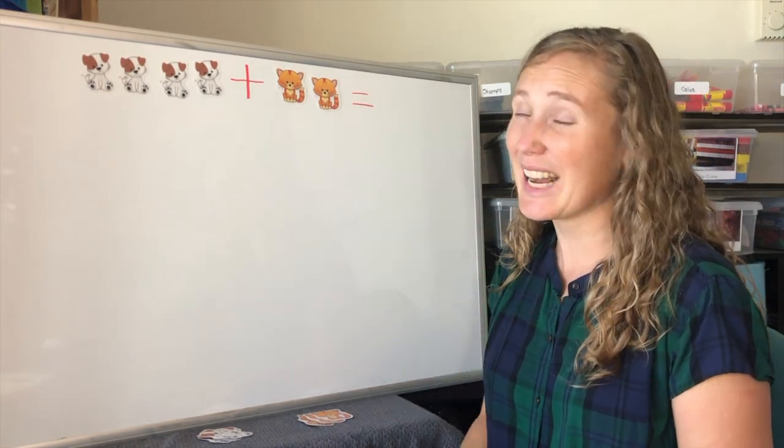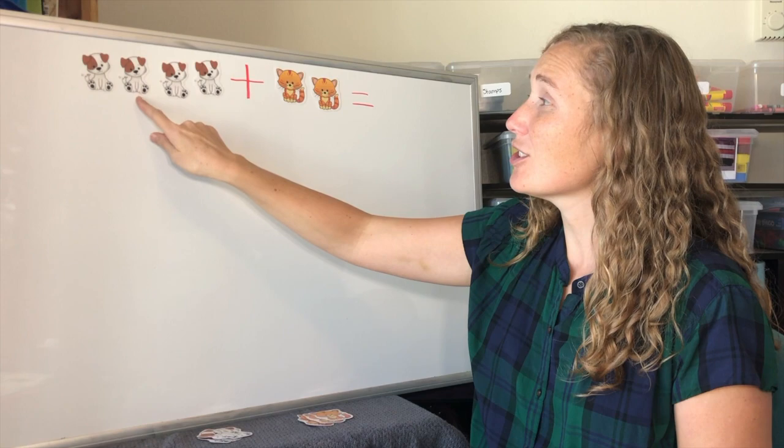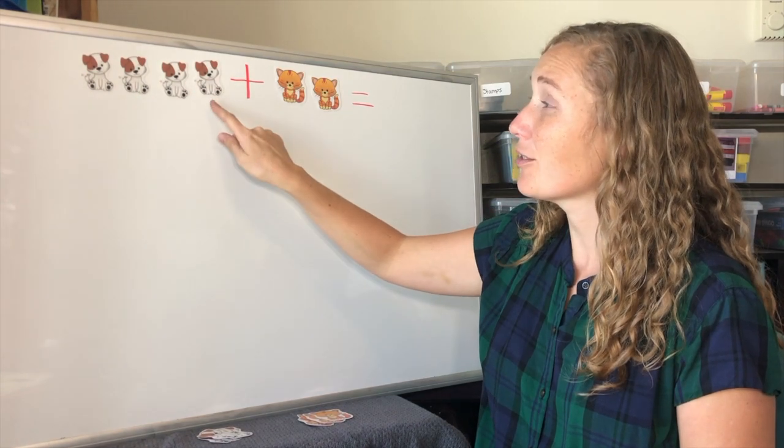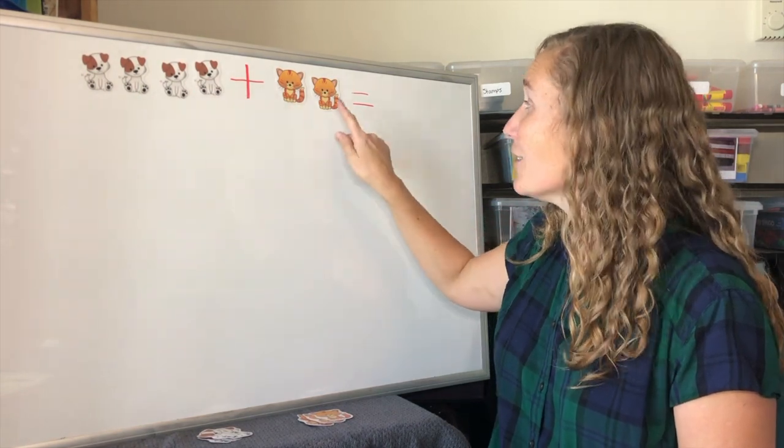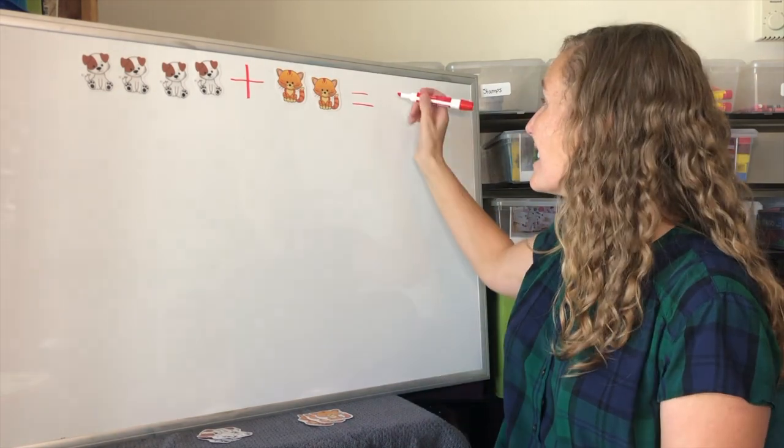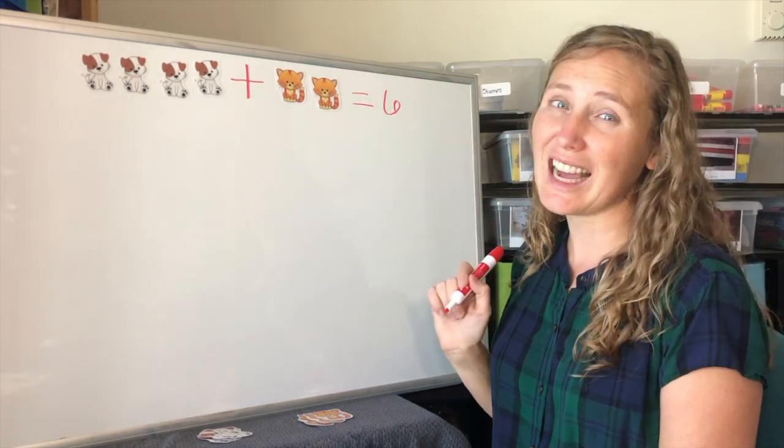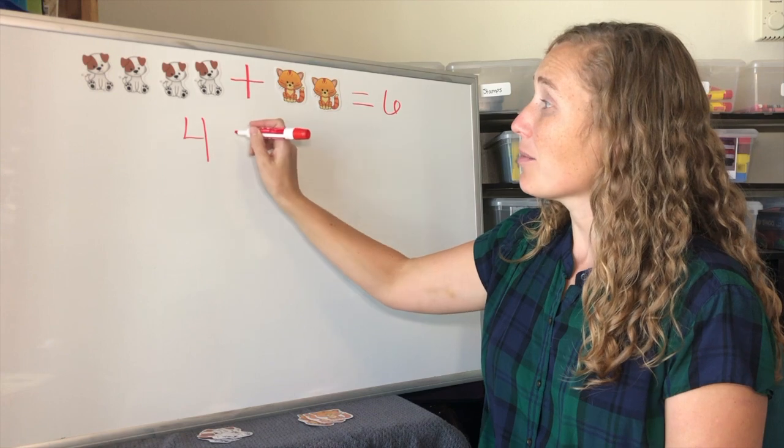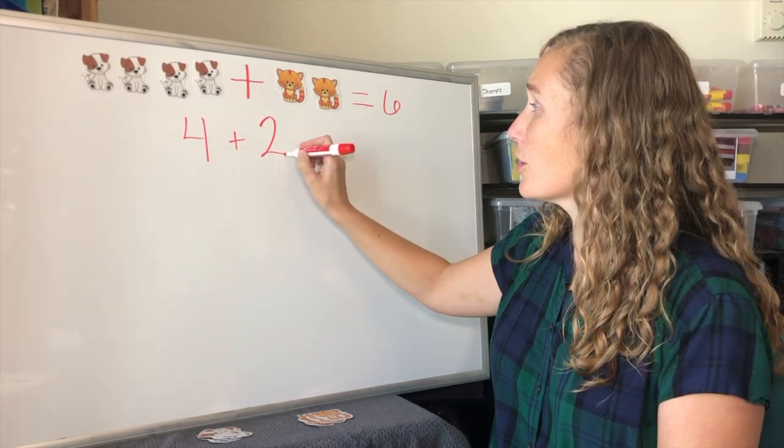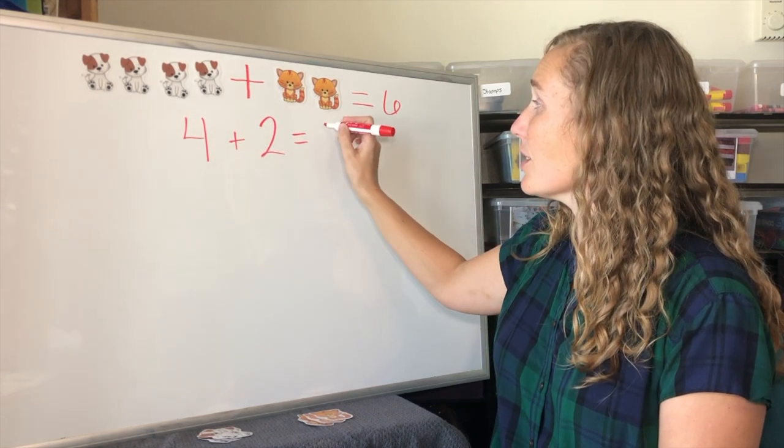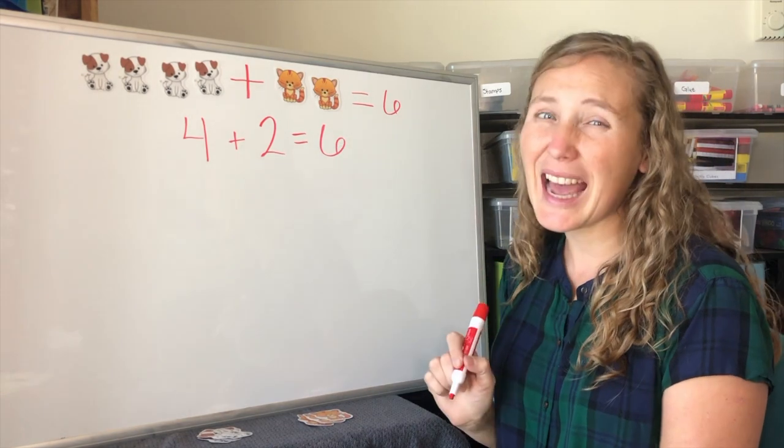Let's count them together. One, two, three, four, five, six. Six pets all together. Four dogs plus two cats equals six pets.